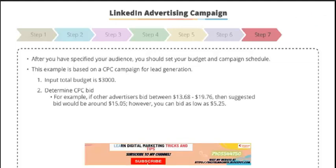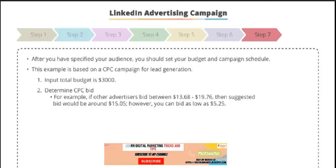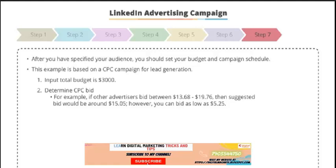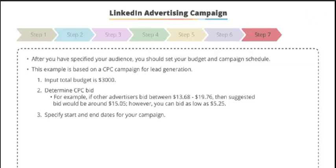Next, we need to determine what our cost-per-click bid is. LinkedIn will suggest what this should be based on what other advertisers are bidding for a similar audience. In this example, LinkedIn's suggesting that we bid $15.05, as other advertisers are bidding between $13.68 and $19.76. We don't have to take on board LinkedIn's suggested bid rate — we can actually bid as low as the minimum set, which is $5.25, but it's advisable not to, as we won't be competing with any of the other advertisers. We can then specify start and end dates for the campaign, and note that you can always refine your targeting criteria, campaign dates, and bid rate once you've launched the campaign.